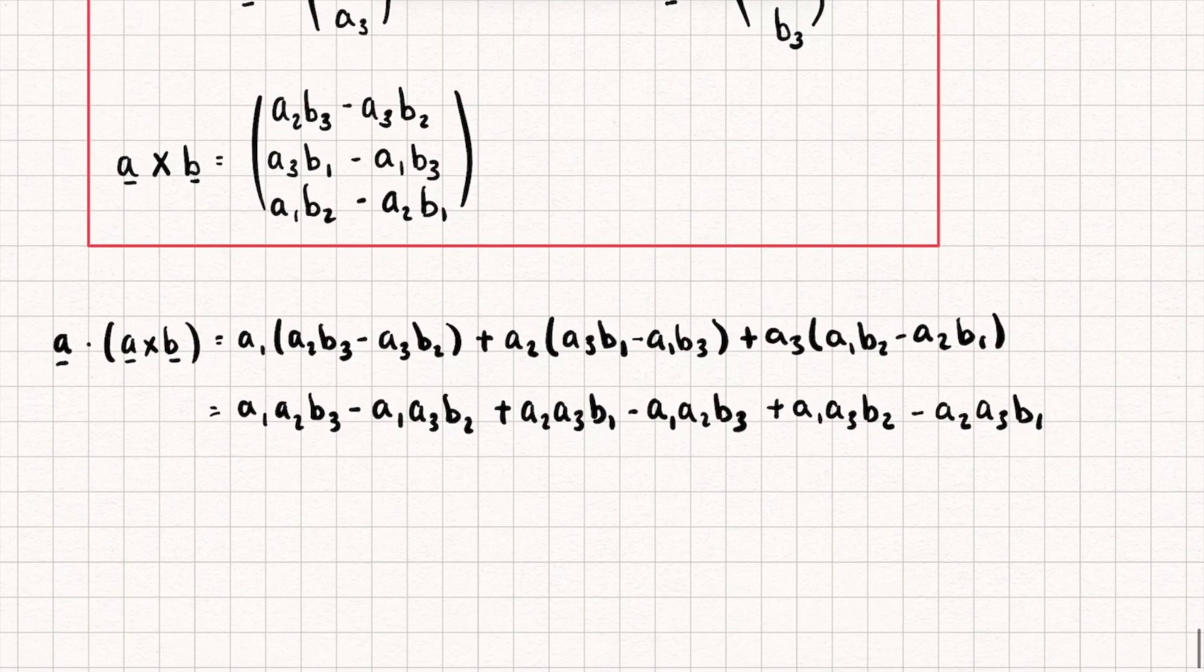Okay, let's see if any of these cancel out. Hopefully you can spot that this term here is the same as this one here and we're subtracting one from the other so they cancel out. This term a1a3b2 is the same as this one, with a minus in front so those cancel out. And finally a2a3b1 cancels with this term here and everything goes to zero. So the dot product equals zero and therefore vector a is perpendicular to a cross b.